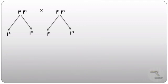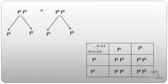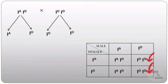Similarly, if one parent has blood group A and the other has blood group O — with the father having genotype IᴬIᵒ and the mother having genotype IᵒIᵒ — then from the father we get gametes Iᴬ and Iᵒ, and from the mother we get gametes Iᵒ and Iᵒ. Then 50% of the children will have blood group A and 50% will have blood group O.